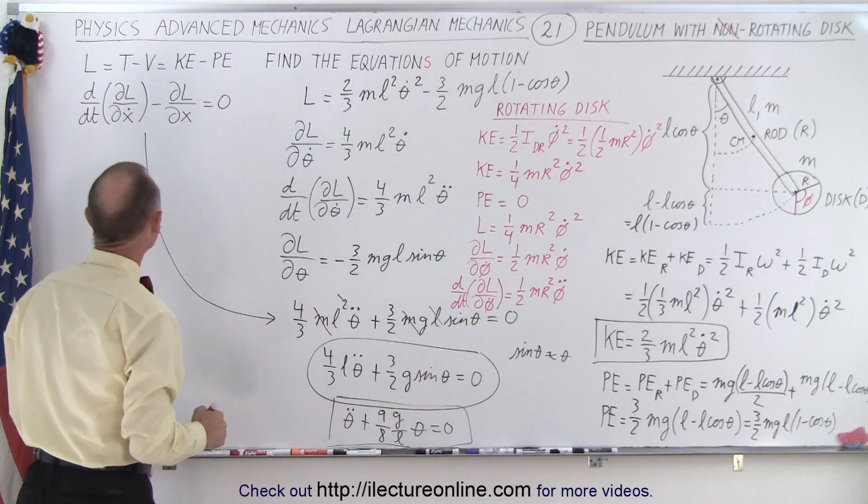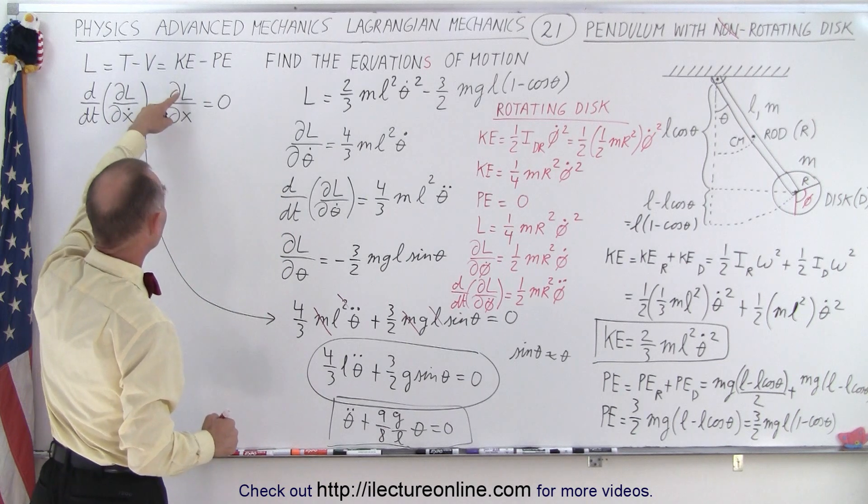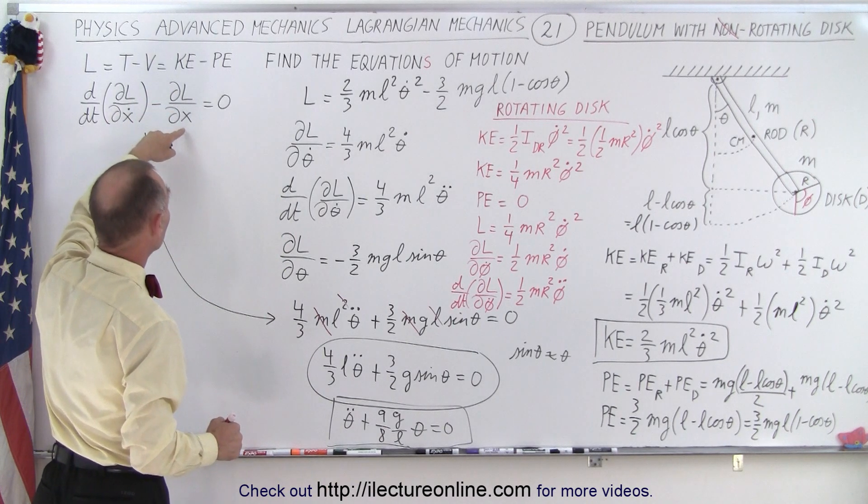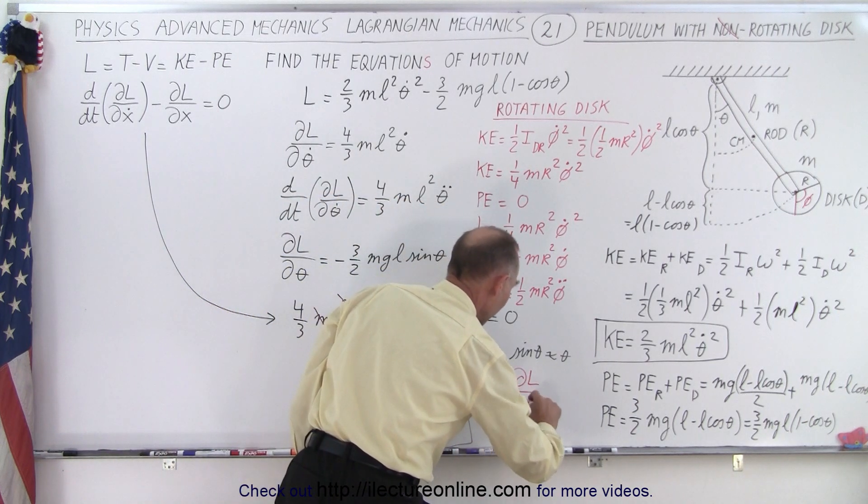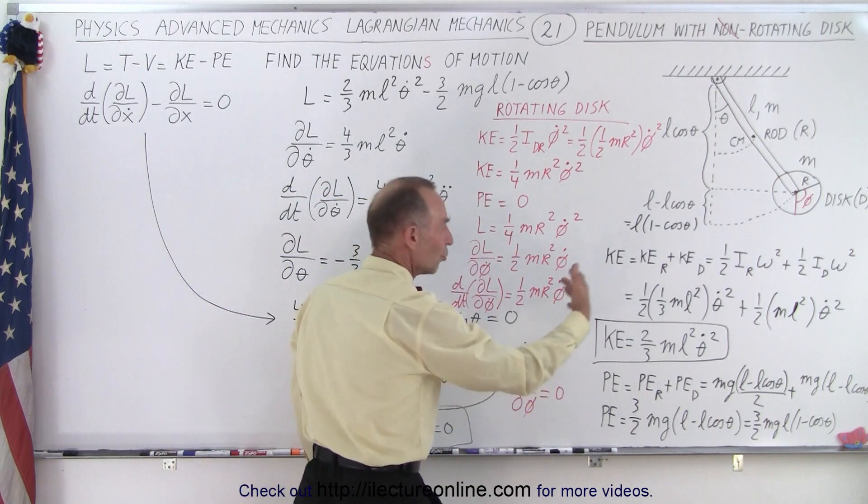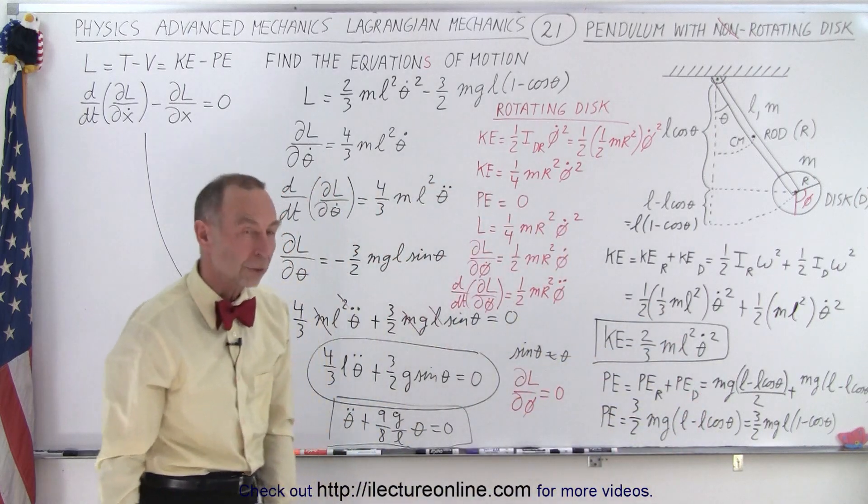And then we realize that if we take the derivative with respect to phi, I'll write that here, the partial of L with respect to phi, that must be zero because there was no potential energy term that we need to worry about.